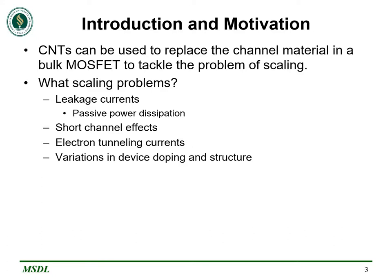Carbon nanotubes can be used to replace the channel material in a bulk MOSFET in order to tackle the problem of scaling and shrinking down transistors to the sub-22nm range. What are the current problems with trying to shrink our MOSFETs beyond a certain limit? Leakage current and passive power dissipation is a huge problem — we would like to have as close to zero leakage current as possible while maintaining a high on current. Other problems include short channel effects like velocity saturation, electron tunneling currents where electrons can tunnel through certain barriers, and variations in device doping and structure.